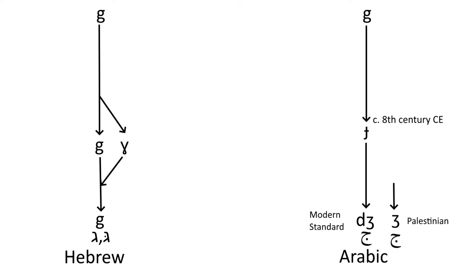and some Arabic varieties, including Palestinian, even de-affricated the J to sound like the J in English vision or French J. Thus compare Palestinian Arabic jamal and Hebrew gamal, camel.